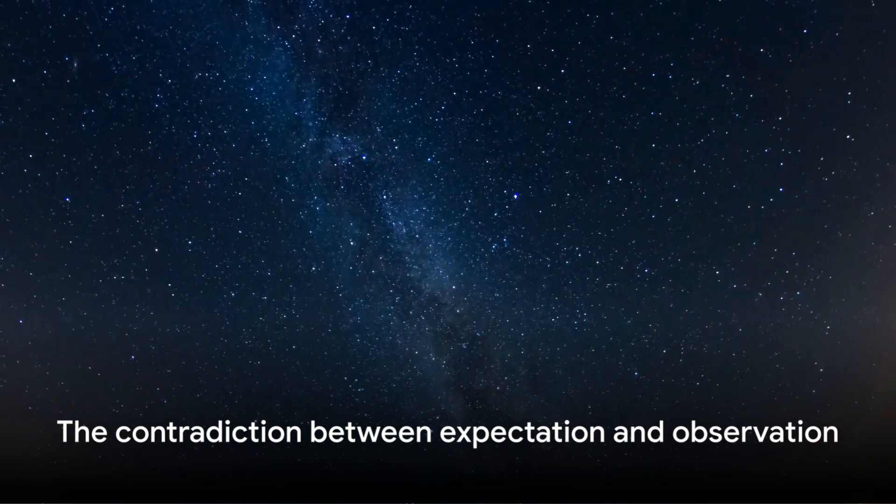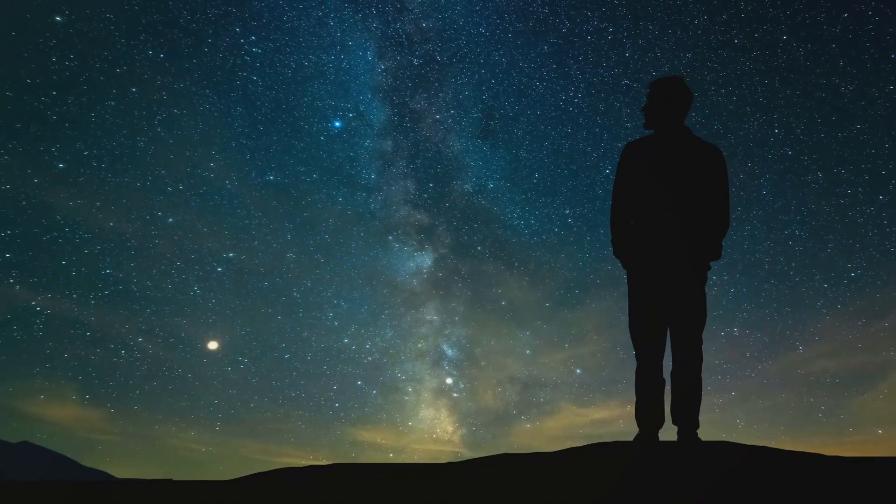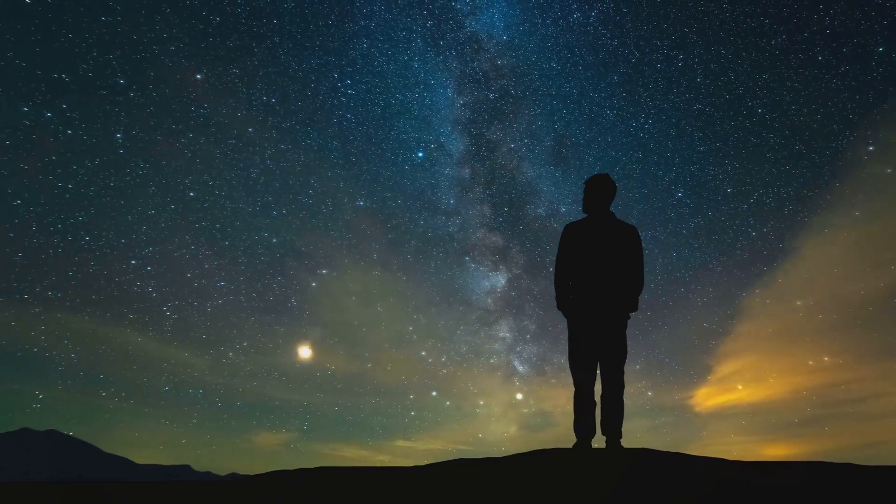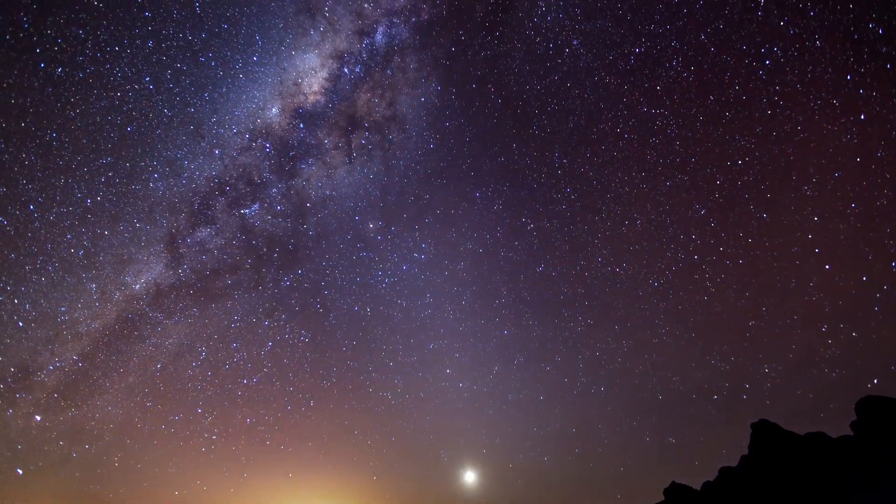But instead, when we look up at the sky, we see a lot of darkness punctuated by points of light. This contradiction between our expectation and observation is the core of the paradox. So it's clear that something about our assumptions must be wrong.